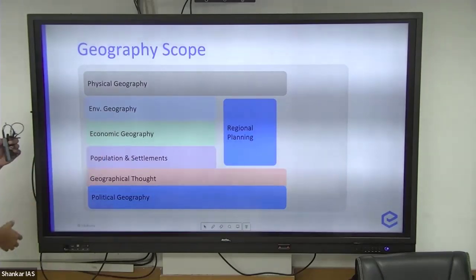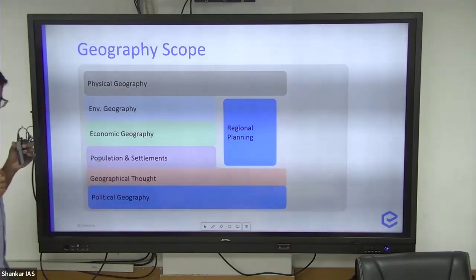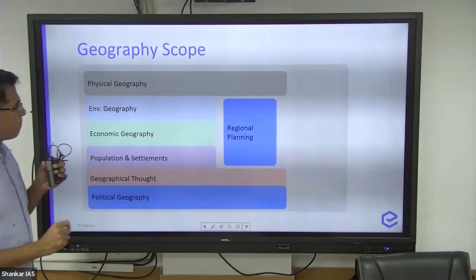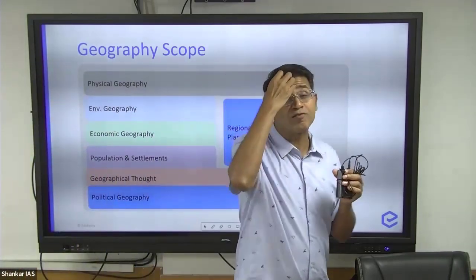Urban and rural areas, there's a philosophical area called geographical thought, political geography, and regional planning. Planning is a very important part of geography.